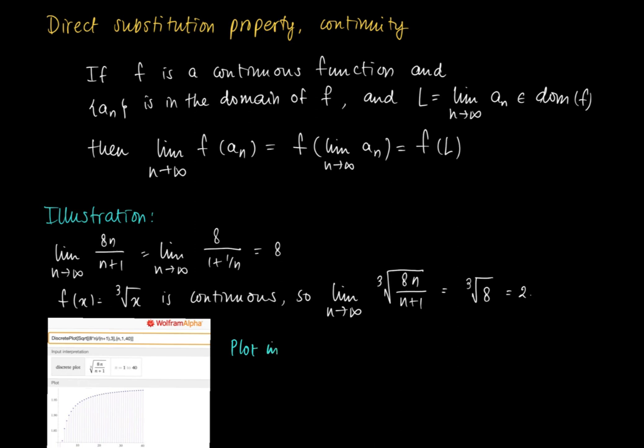Here's an illustration: we have the cubic root of 8n/(n+1) for n equals 1 to 40, and we see that there's a tendency to the line y=2. That's the line here that we put in green. This plot is derived by Wolfram Alpha, which you can find on the web and use for free.